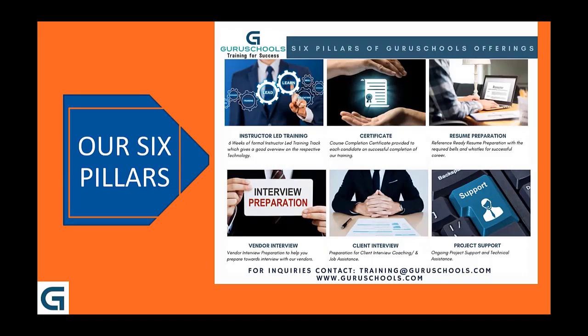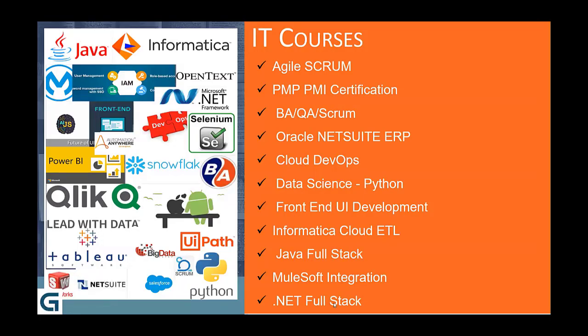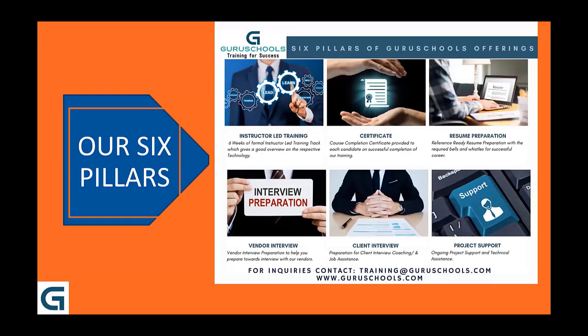The sixth pillar is project placement and ongoing project support. Somehow, with the help of the vendor and Guru Schools, you got the project — but how can you sustain it? Our trainers will shadow you day in and day out for the first six months to make sure you sustain and survive on your project. Practice makes perfect. In a group setting, with the help of trainers and like-minded people, you learn how to survive. So these are the six pillars: six to eight weeks of training; course completion certificate; reference-ready resume; vendor interview preparation; end client interview preparation; and project placement and ongoing support.